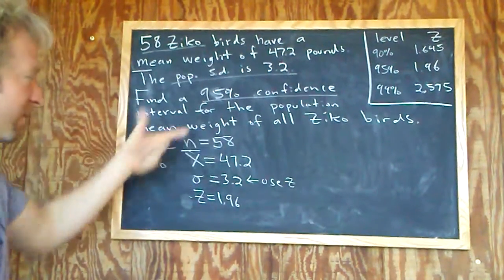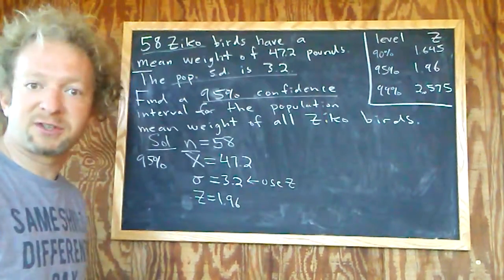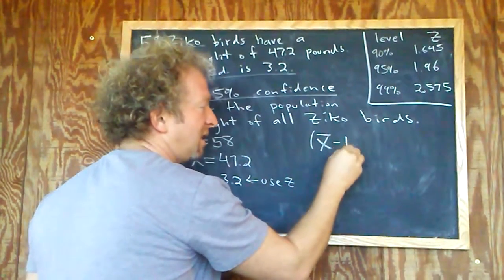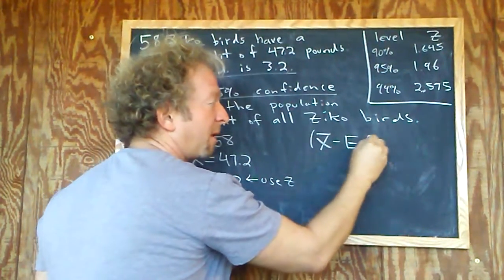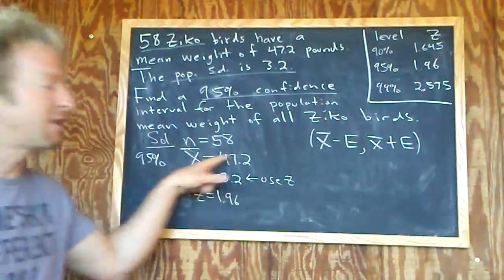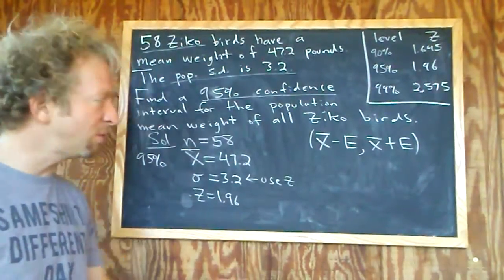You read the question and write down the variables. All you have to do now is find a confidence interval. The formula is super easy: it's x-bar minus e, comma, x-bar plus e. We already know what x-bar is, so you just got to find e and plug everything into the formula.